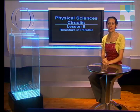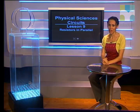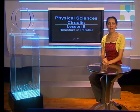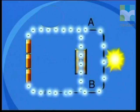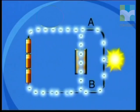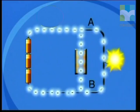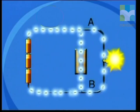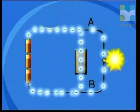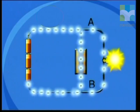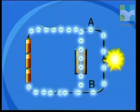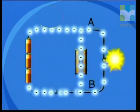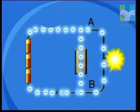In a parallel circuit, components are placed alongside each other. The circuit may have two or more branches. Look at this animation. Current flows through both the resistor and the lightbulb in parallel at the same time. You can see that some of the electrons travel through the resistor while some travel through the lightbulb.